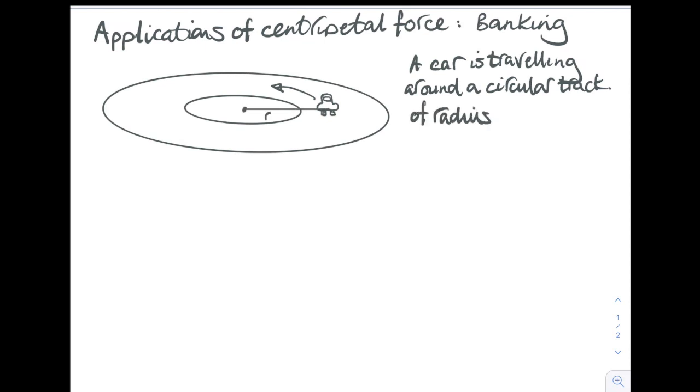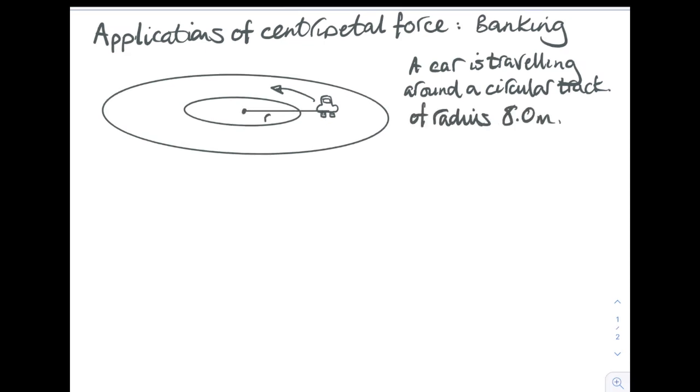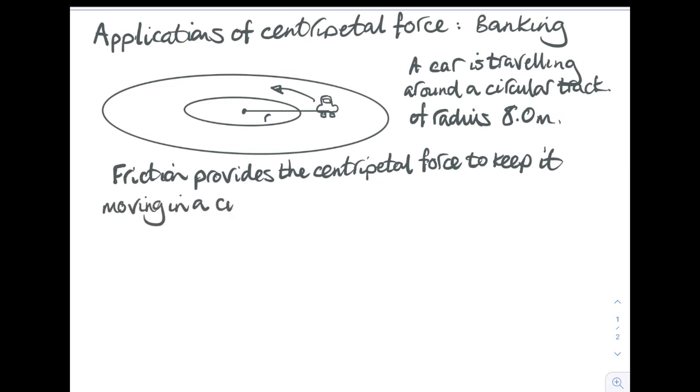This is when you bank a track that a vehicle is traveling on to allow it to move faster around the track. So we've got a car traveling on a circular track with a radius of eight meters. If that track is flat, friction provides the centripetal force to keep it moving in a circle.